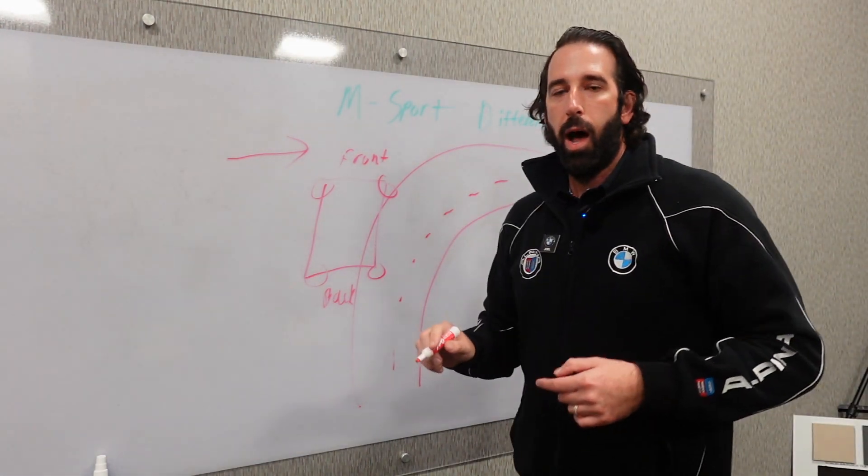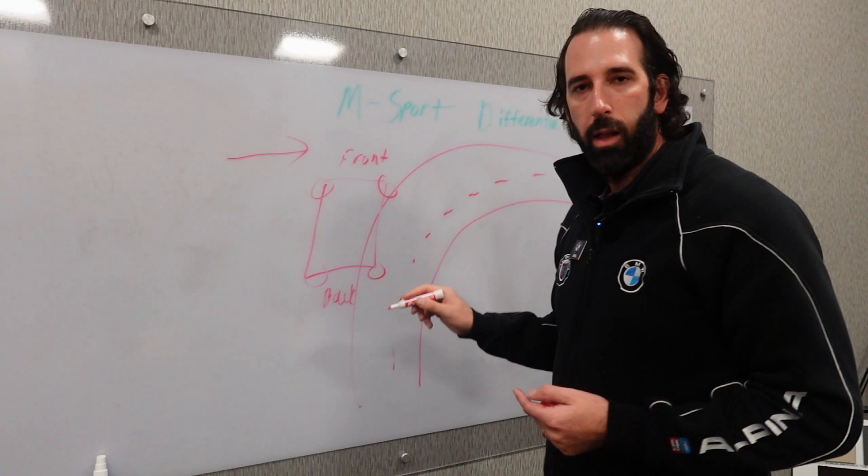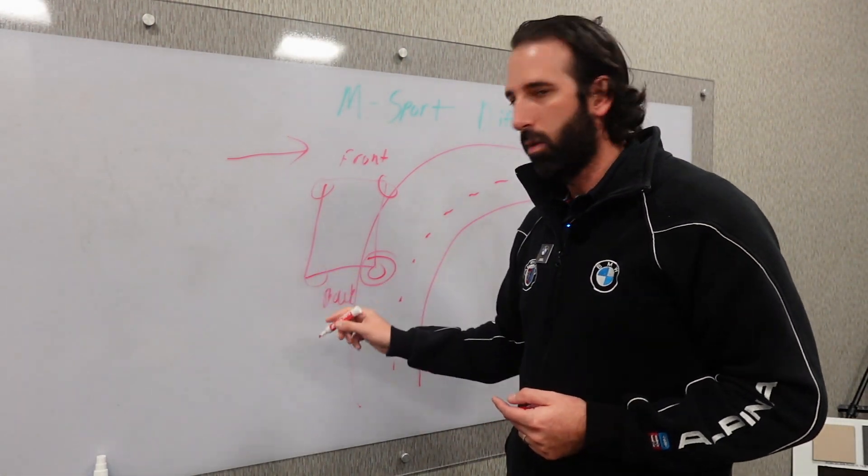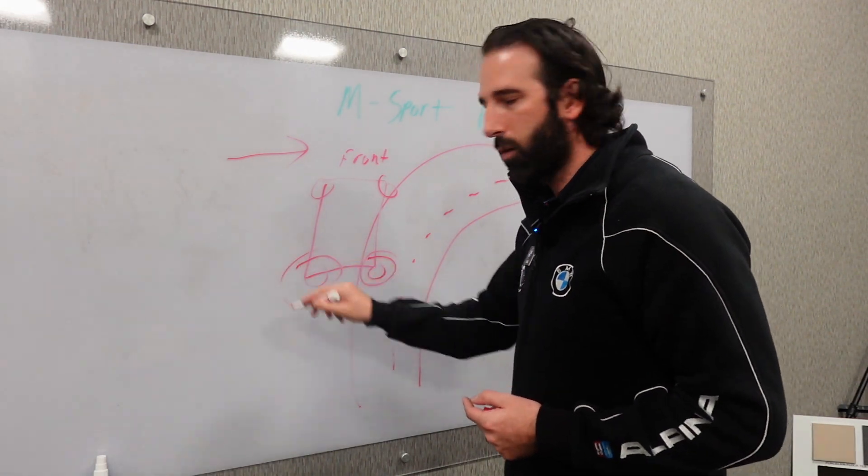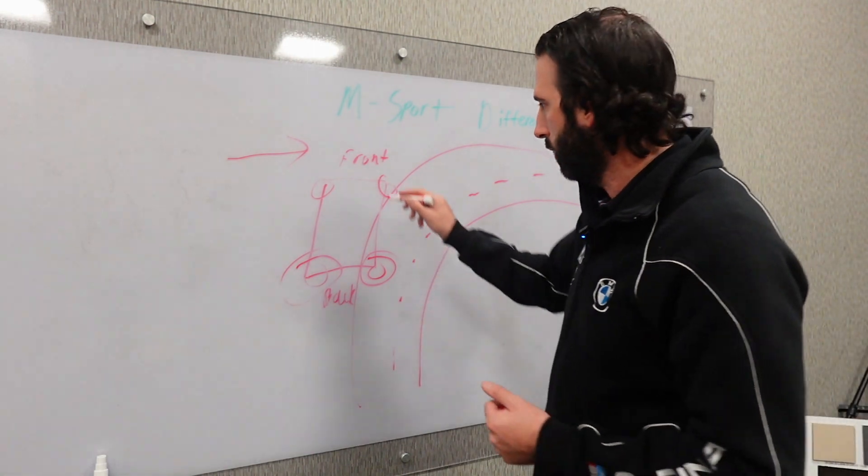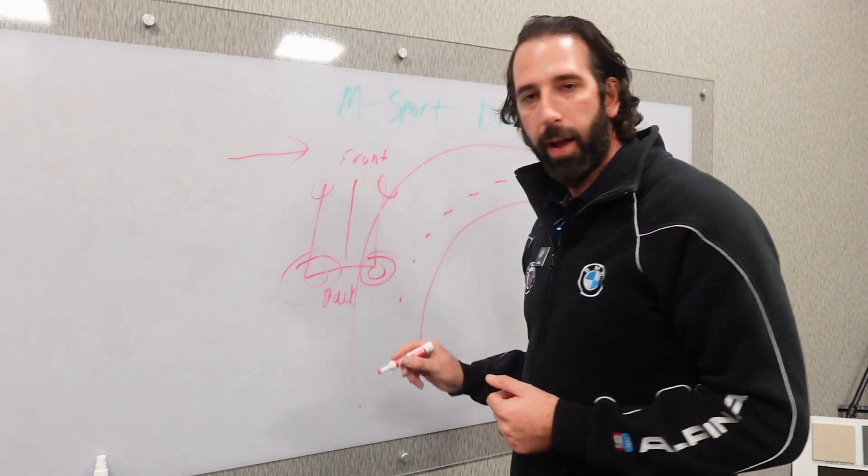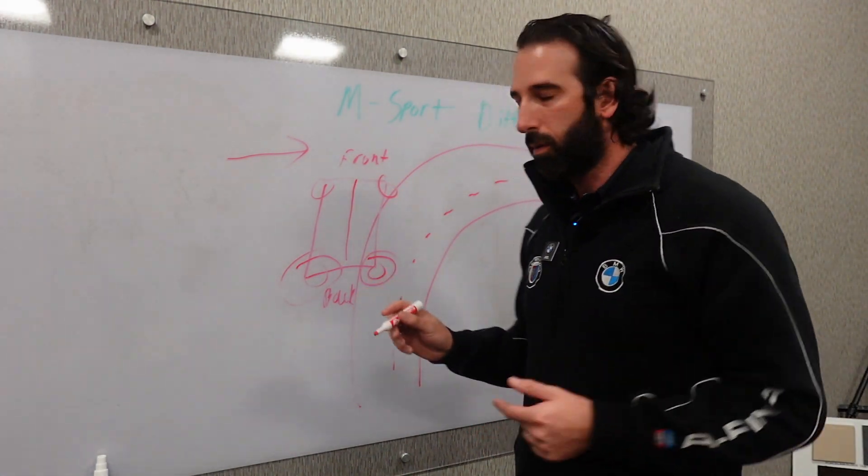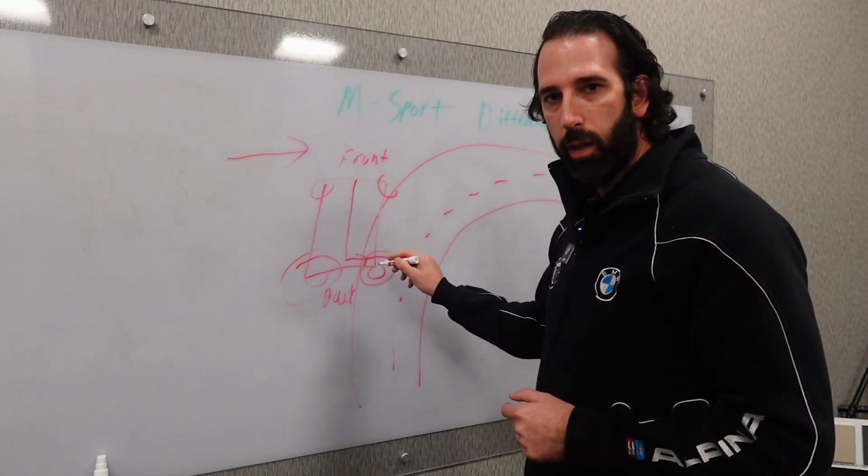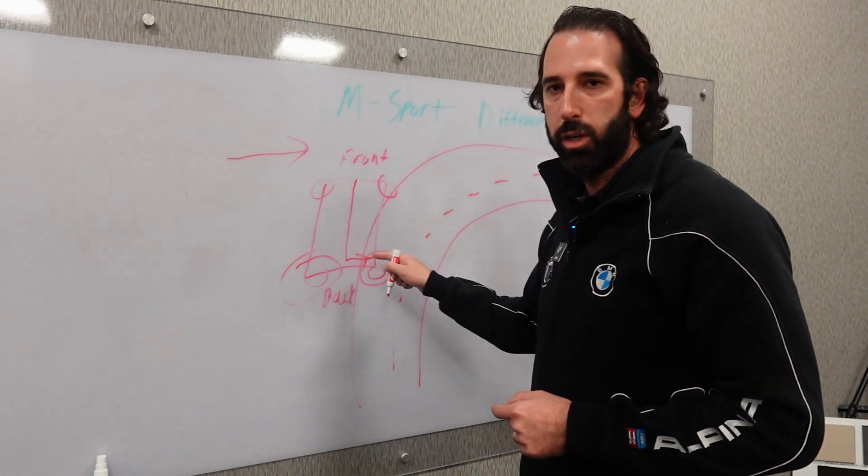So on a curve, the inner wheel, on the back especially, this is going to turn at a slower rotational speed than the outer wheel. This wheel is going to be turning a lot quicker. It's going to be rotating a lot quicker. So what the M Sport Differential is going to do, the torque vectoring system known as the X-Drive, is going to vector more torque to this inner wheel here to compensate for the rotational difference.